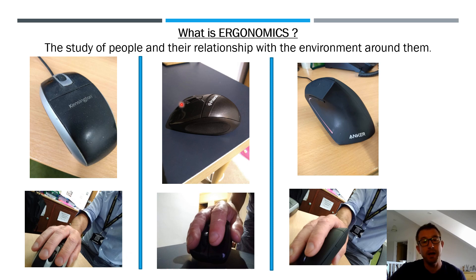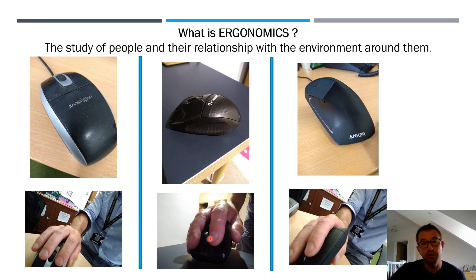My second mouse has a nice sculptured thumbprint area and is more sculptured overall. The finger positions are still quite useful in terms of being where they should be to press the buttons with the roller ball, but again it sits at that awkward angle.